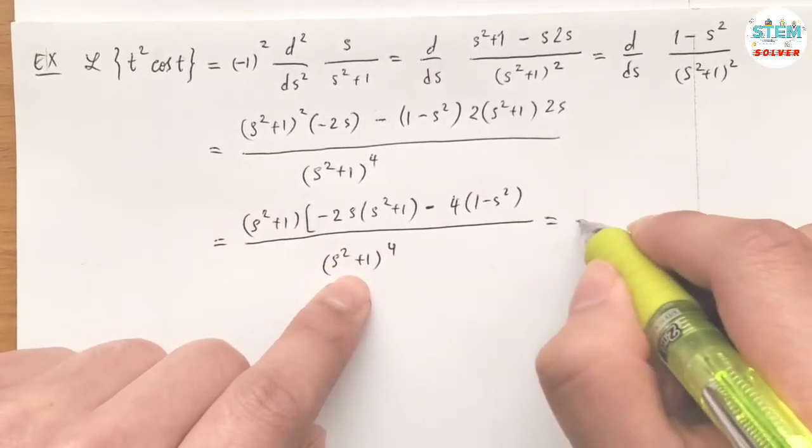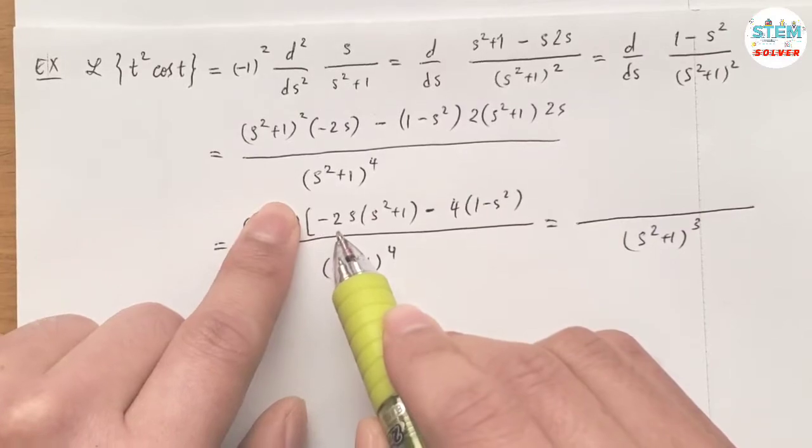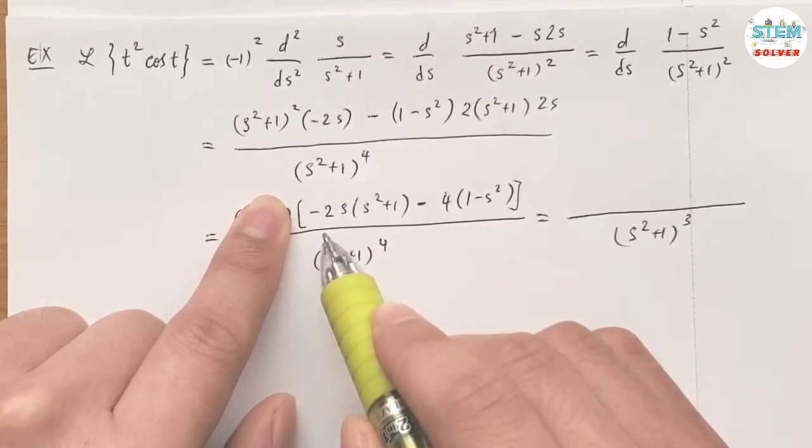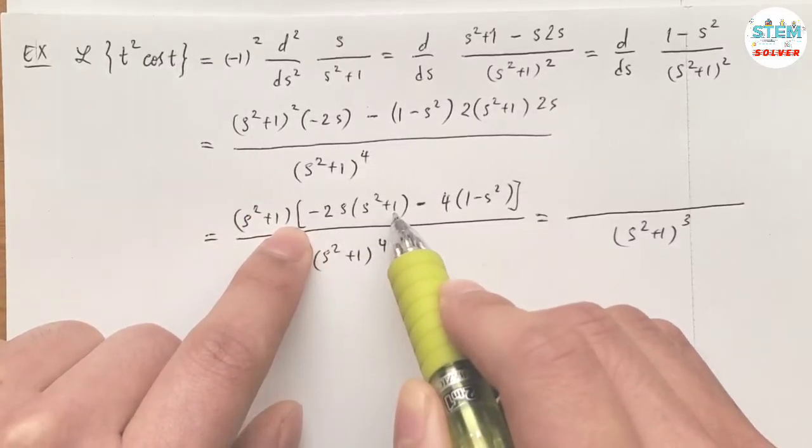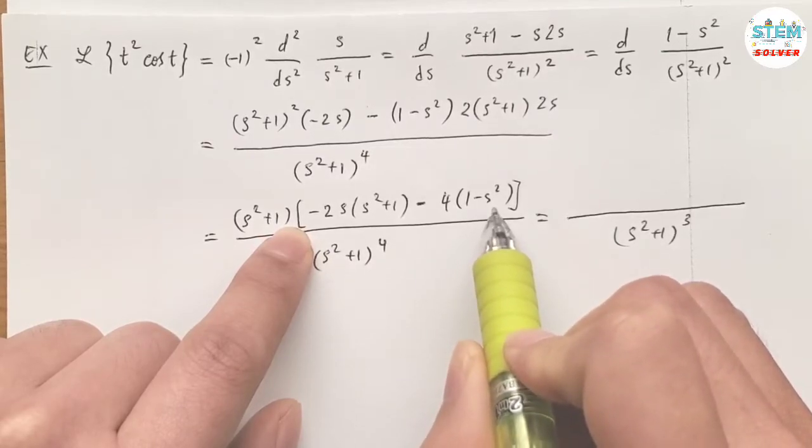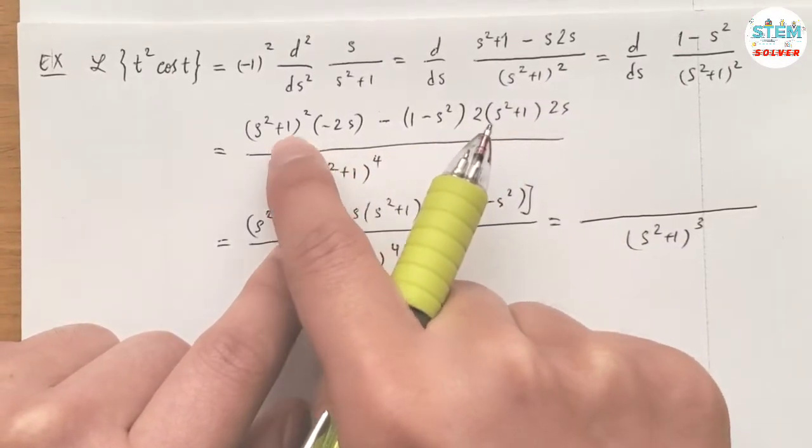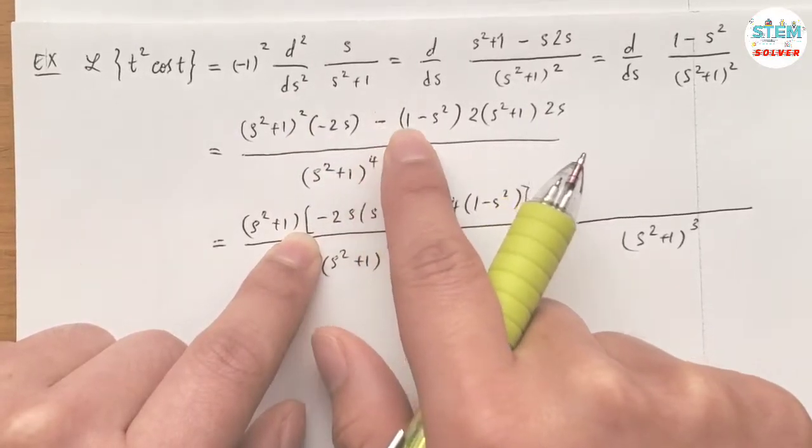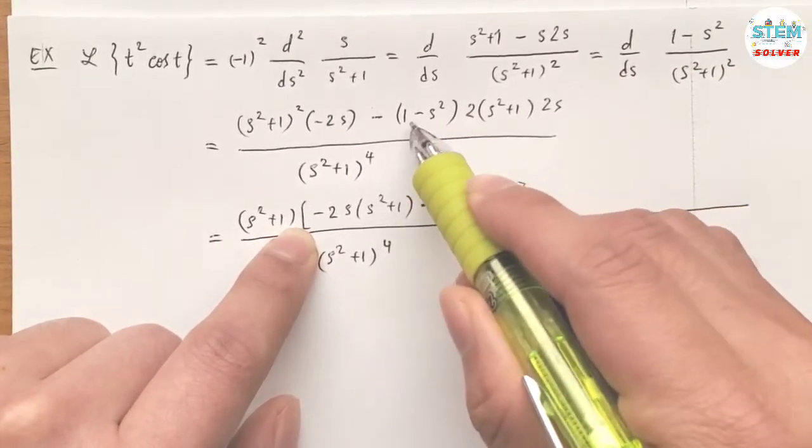On the top, simplify this: we have -2s² minus 2s plus 4 minus 4s². We're left with -2s² times (s²+1), minus 2 times 2 which is 4, so 4s times (1-s²).